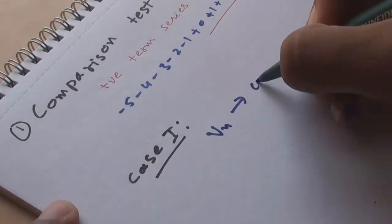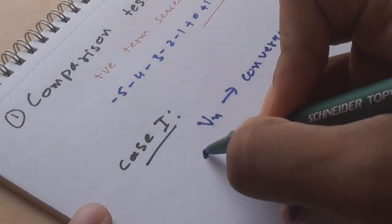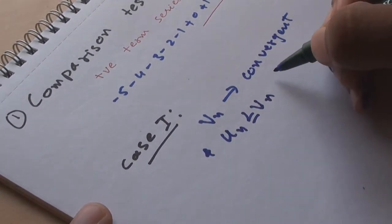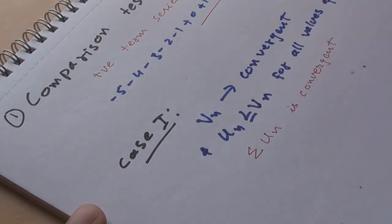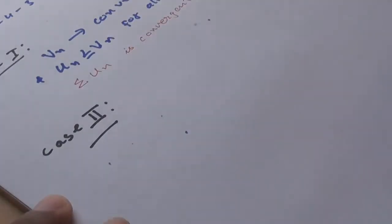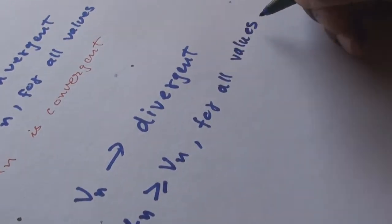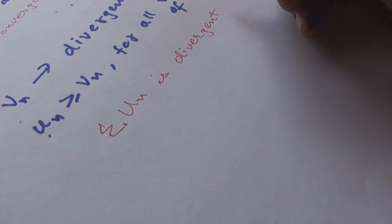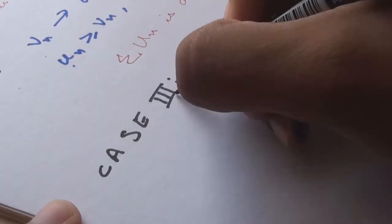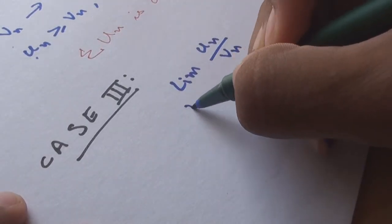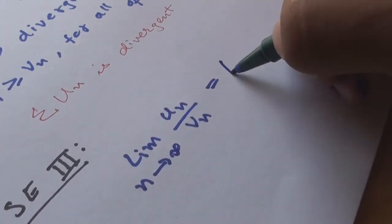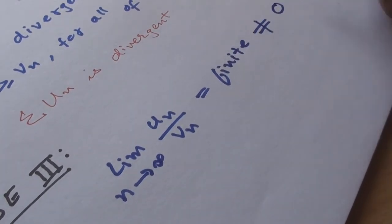Coming back to the comparison test, consider two positive term series un and vn. Case 1: If vn is convergent and un ≤ vn for all values of n, then un is also convergent. However, the most important case is Case 3: If lim(un/vn) as n→∞ is a non-zero finite quantity, then un and vn converge together.